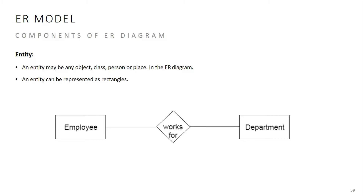An entity can be an object, a place, or a person. For example, a house, a car, a laptop, a phone — these are all entities. An entity has a distinct existence and independent existence. We represent an entity with a rectangular shape.